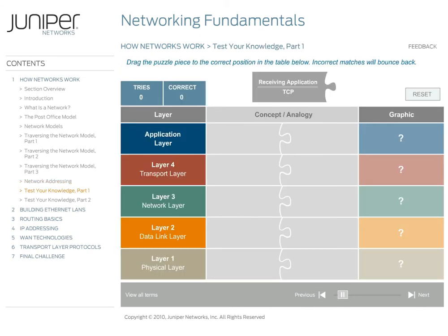Here's a chance for you to review some of the basics about what takes place at each layer of the five-layer networking model. To complete the puzzle on screen, drag each puzzle piece to fit in an empty spot on the related networking layer. You're presented with one puzzle piece at a time in random order. Some puzzle pieces are labeled with networking concepts, and some are labeled with the corresponding parts of the post office analogy. Incorrect matches will bounce back. Match all items correctly on the first try to receive a perfect score. If you'd like a hint, click any question mark in the graphic column.